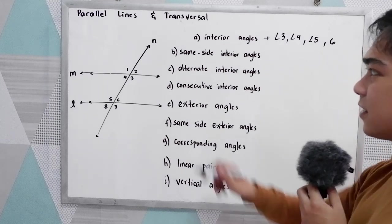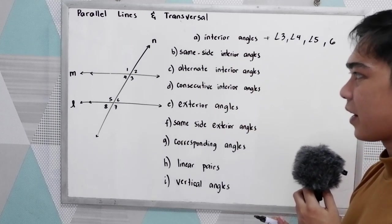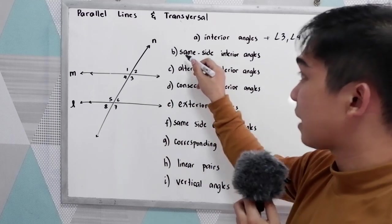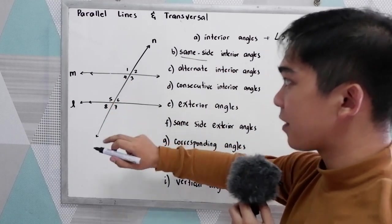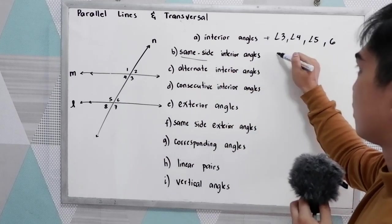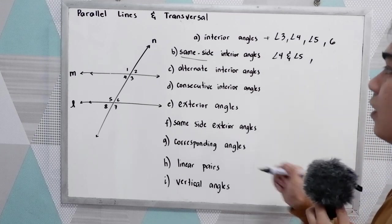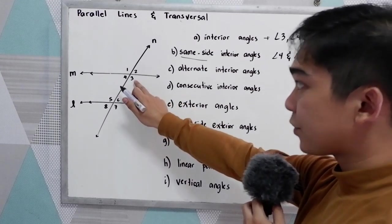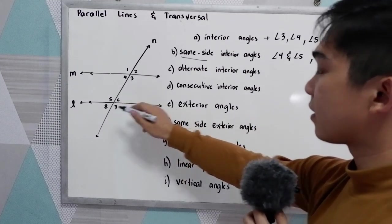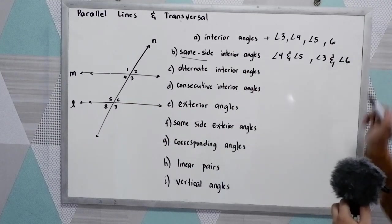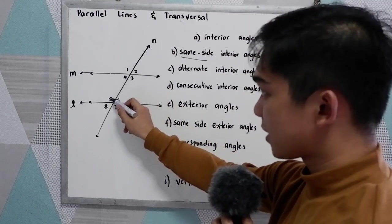Next, same side interior angles. The same side interior angles are angle 4 and angle 5, and another pair is angle 3 and angle 6. Those are the same side interior angles.